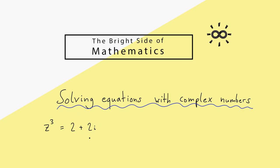The program for today is: find all complex numbers z that solve this equation. First, let's go back to the real numbers. How can you solve an equation of the form x squared equals a fixed real number, maybe 4? You learned in school that we have indeed two solutions: a positive solution x1 which is 2, and a negative solution x2 which is minus 2. So exactly two solutions.